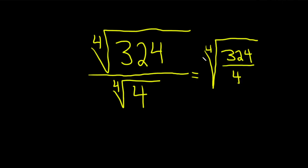So 324 divided by 4 is 81, and you can check by multiplying. If you do 81 times 4, 4 times 1 is 4, 4 times 8 is 32.